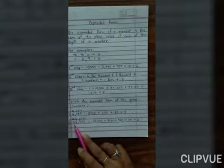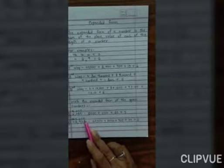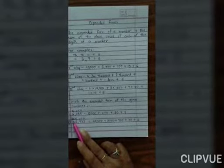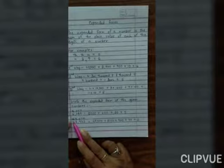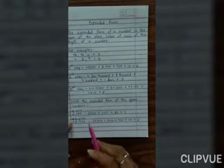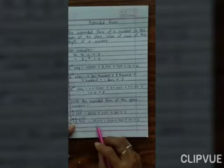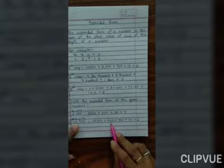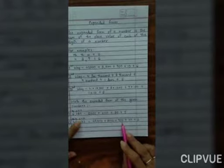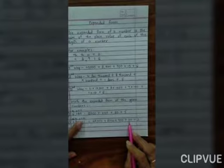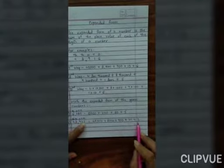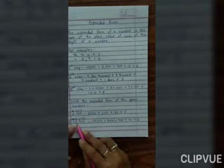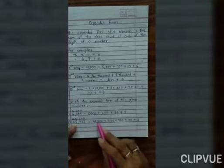Now look at the second number, it is in ten thousand place. 48932. Ones, tens, hundreds, thousands, ten thousands. Maine sabke upar place value daal di, theek hai. Ab dekho, yeh kya hai? Forty. To maine likh diya forty thousand plus - forty-eight thousand - plus eight thousand. Nine is at hundred place, so nine hundred. Three tens means thirty, and two ones, so two.